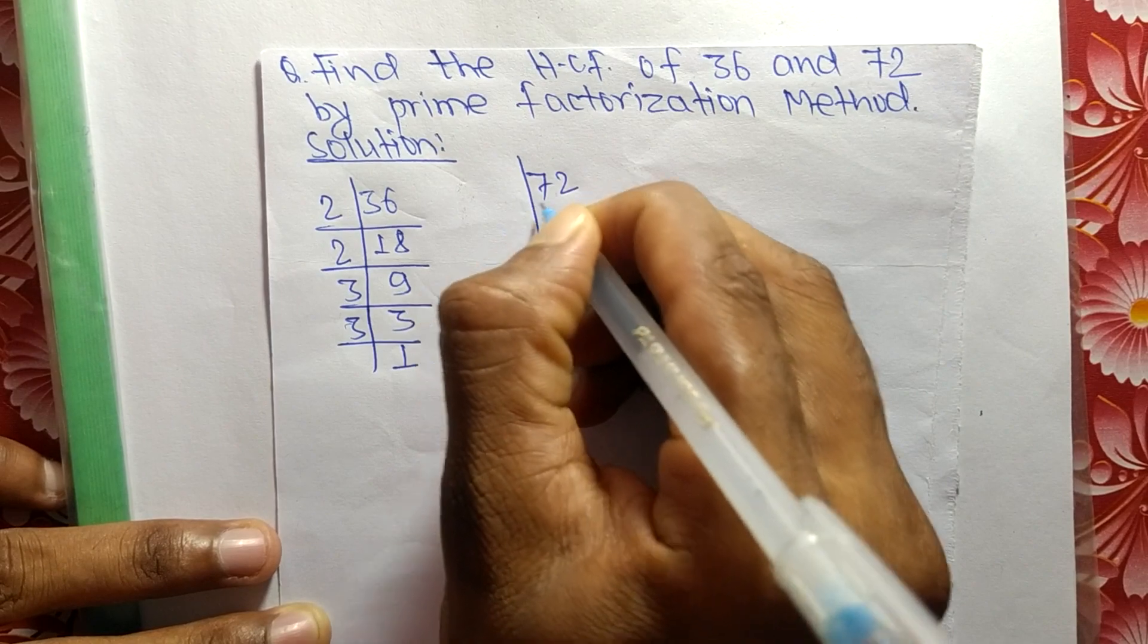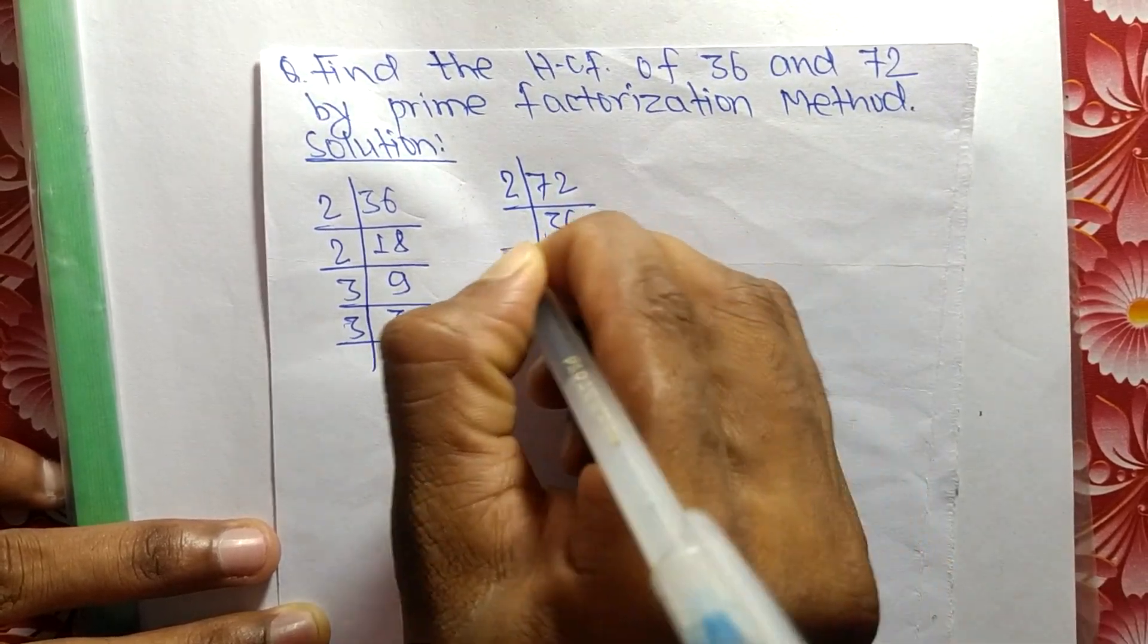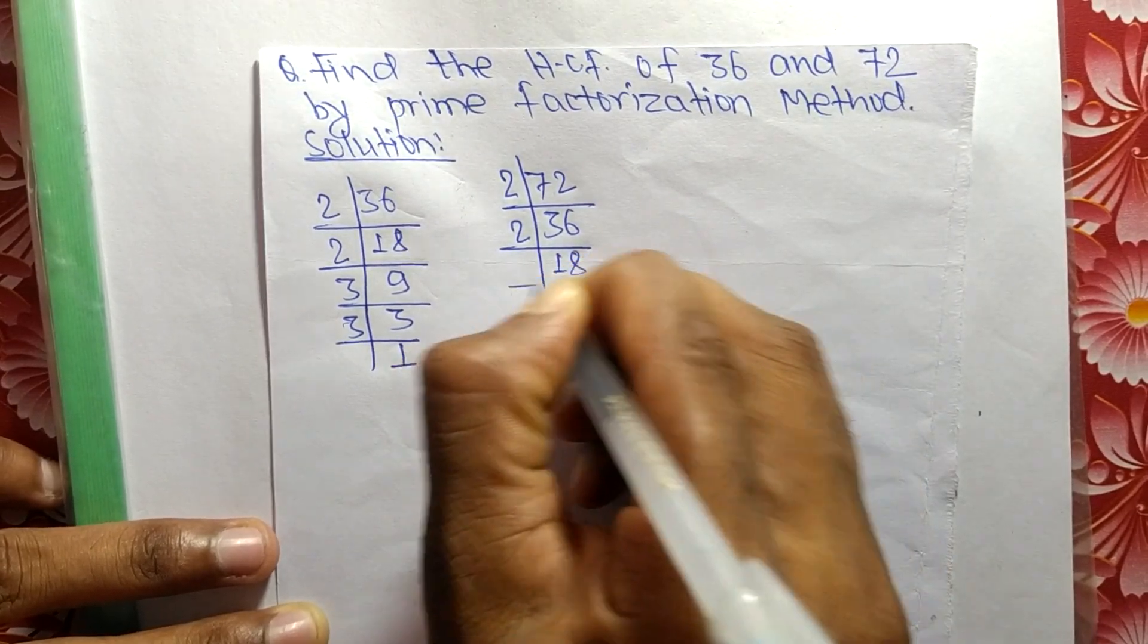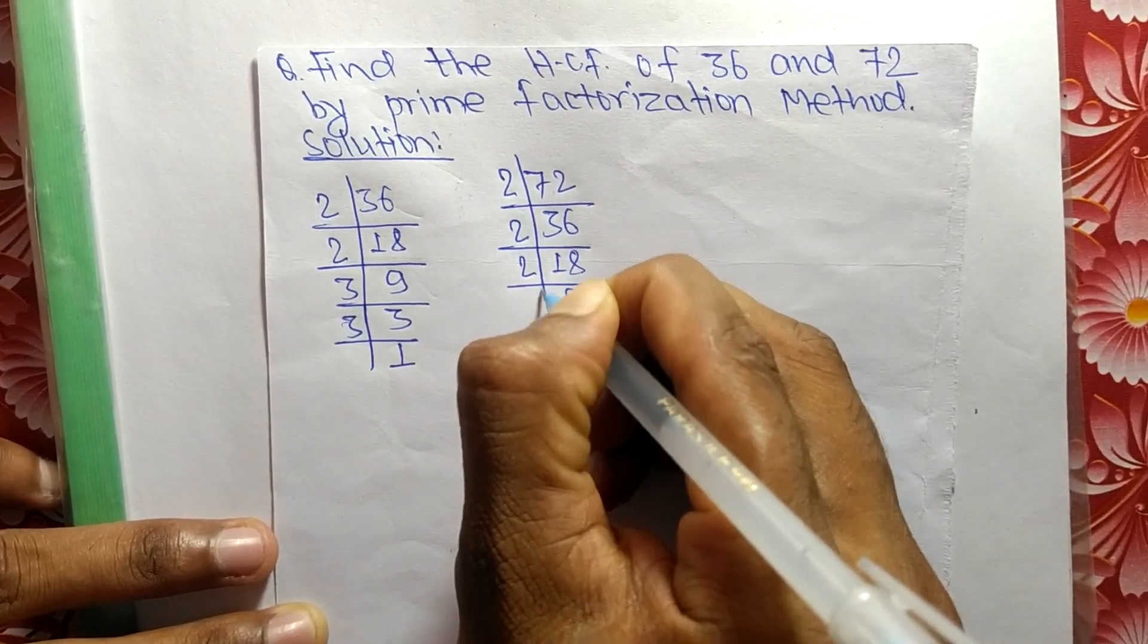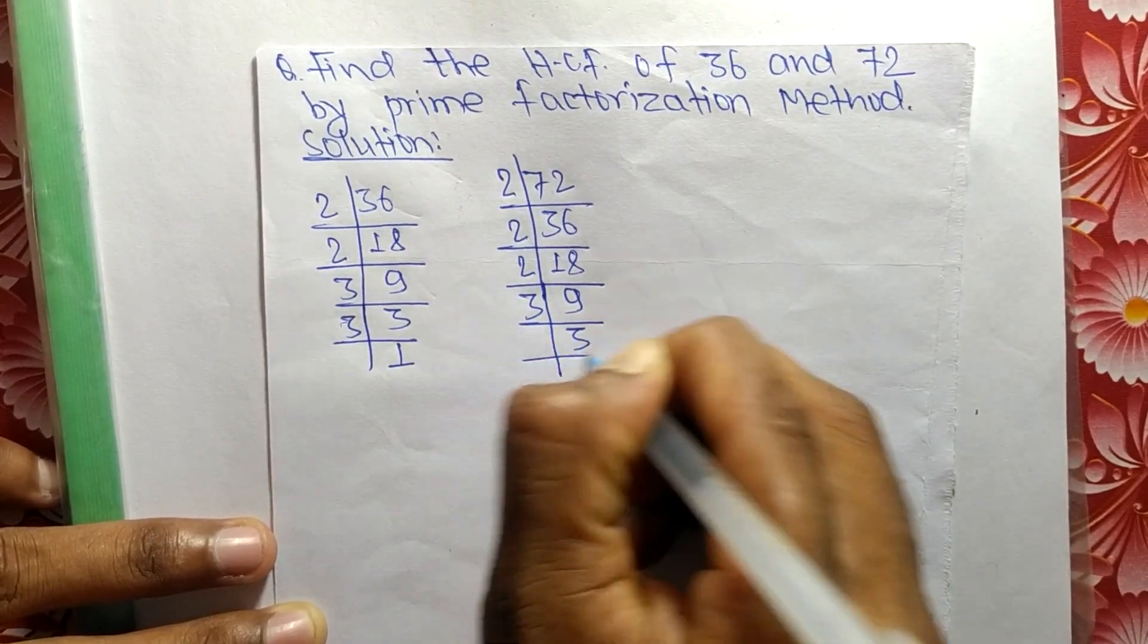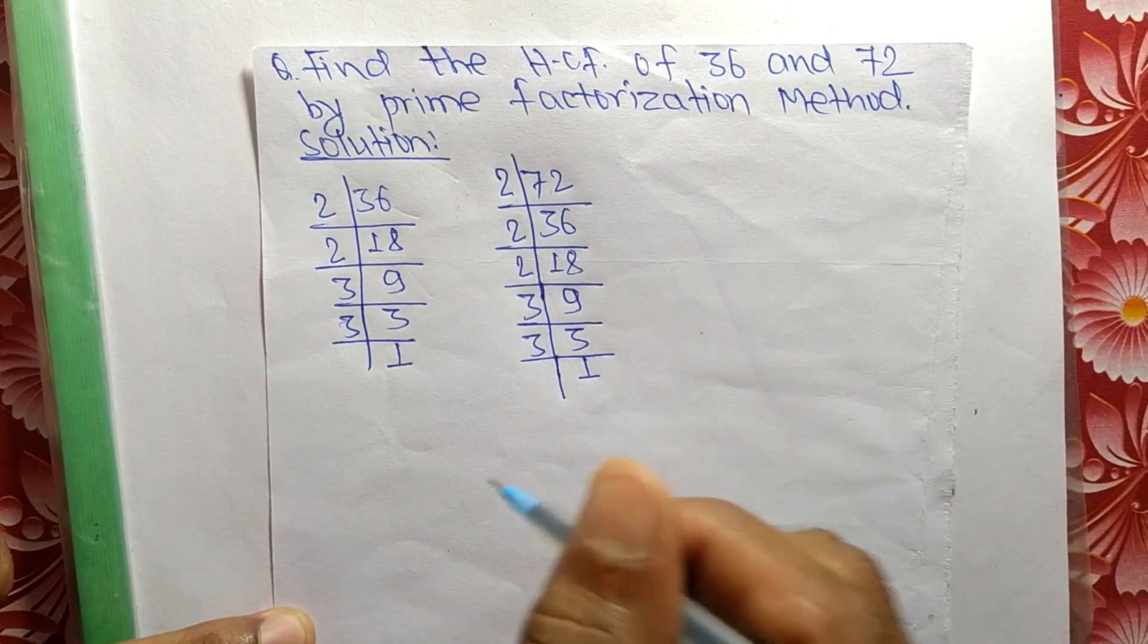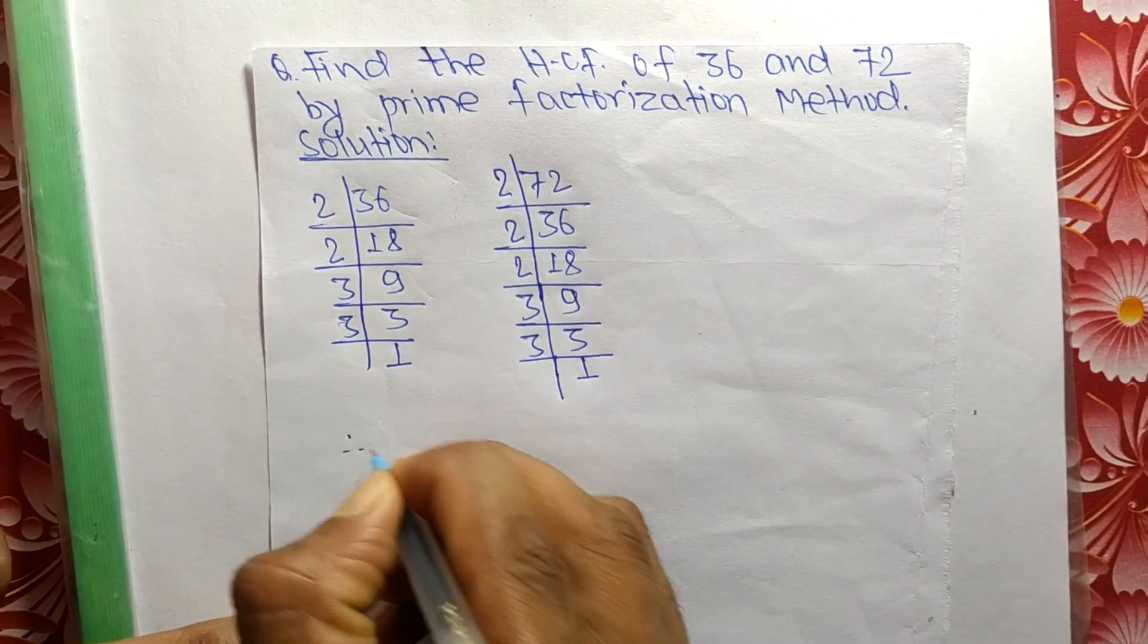The prime factors of 72 are: 2 times 36 equals 72, 2 times 18 equals 36, 2 times 9 equals 18, 3 times 3 equals 9, and 3 times 1 equals 3. Now from these prime factors we can write...